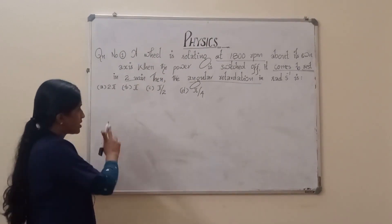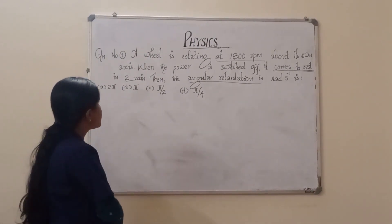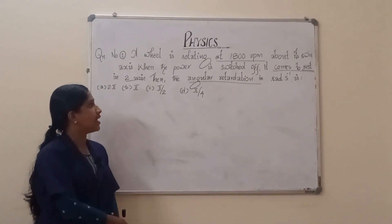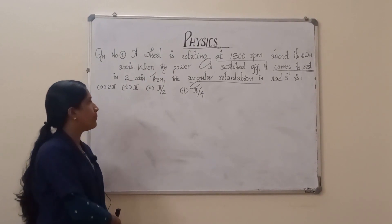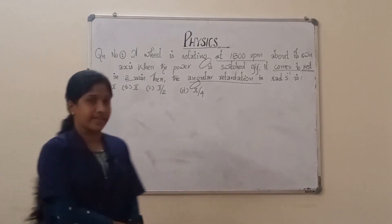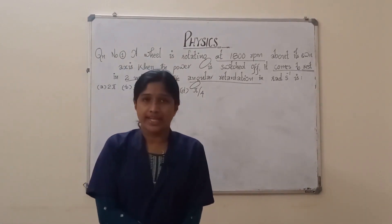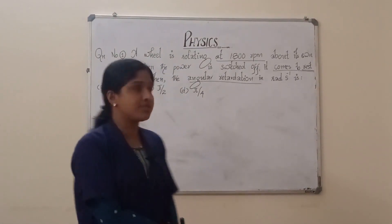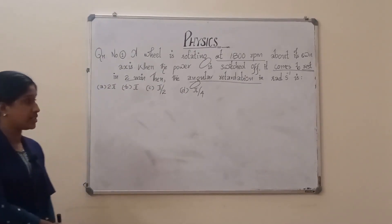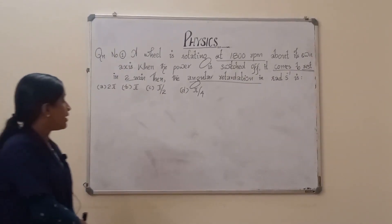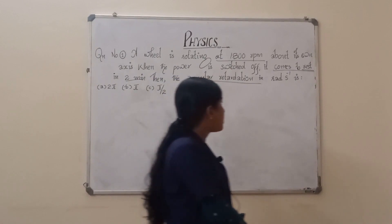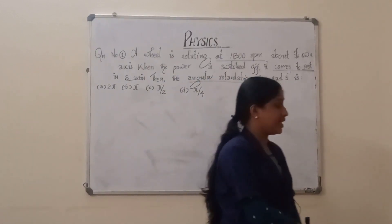The first question is: A wheel is rotating at 1800 rpm about its own axis. When the power is switched off, it comes to rest in 2 minutes. Then the angular retardation in radians per second is?